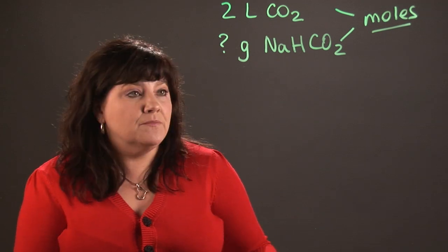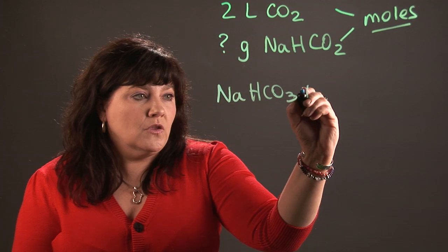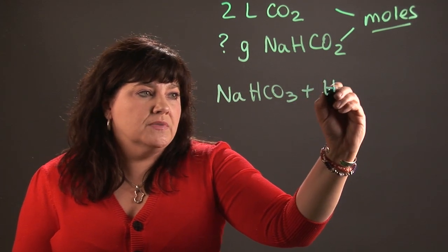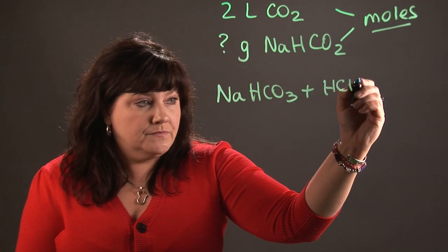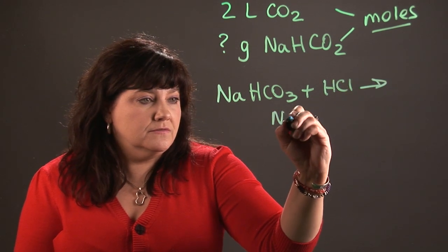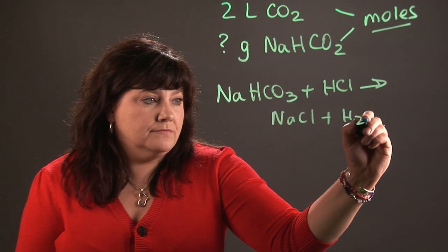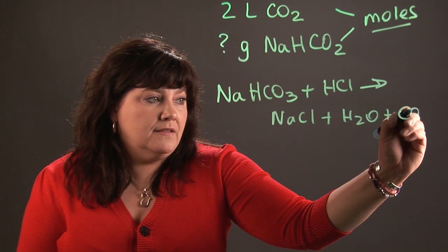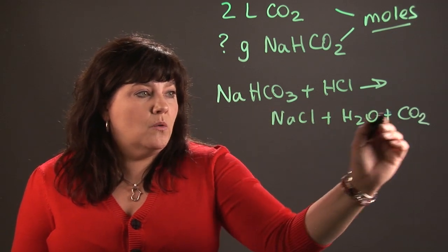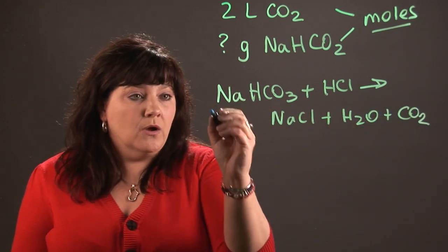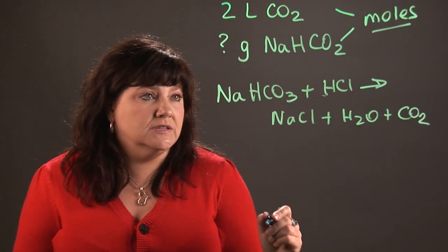So we might have something like NaHCO3 reacting with something like hydrochloric acid, which is the acid in your stomach. And it's going to produce salt and water, and there's the carbon dioxide I'm going to be looking for. And everything is in what we call a one-to-one ratio. There are no numbers out in front, no large numbers in front of any of these substances.